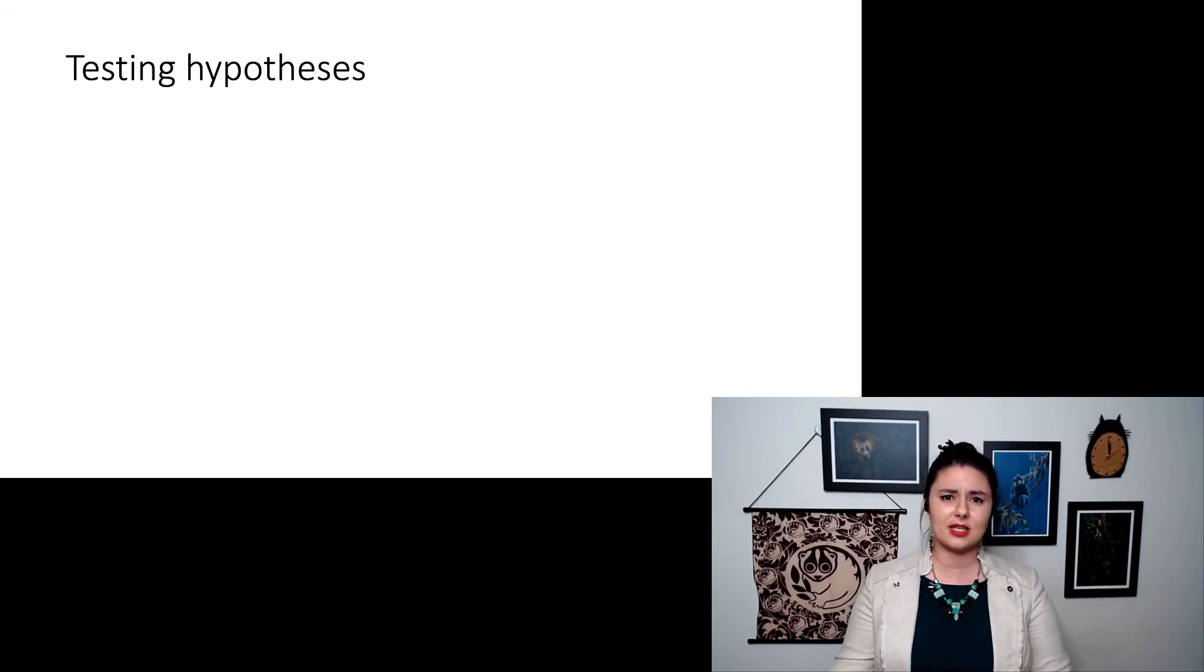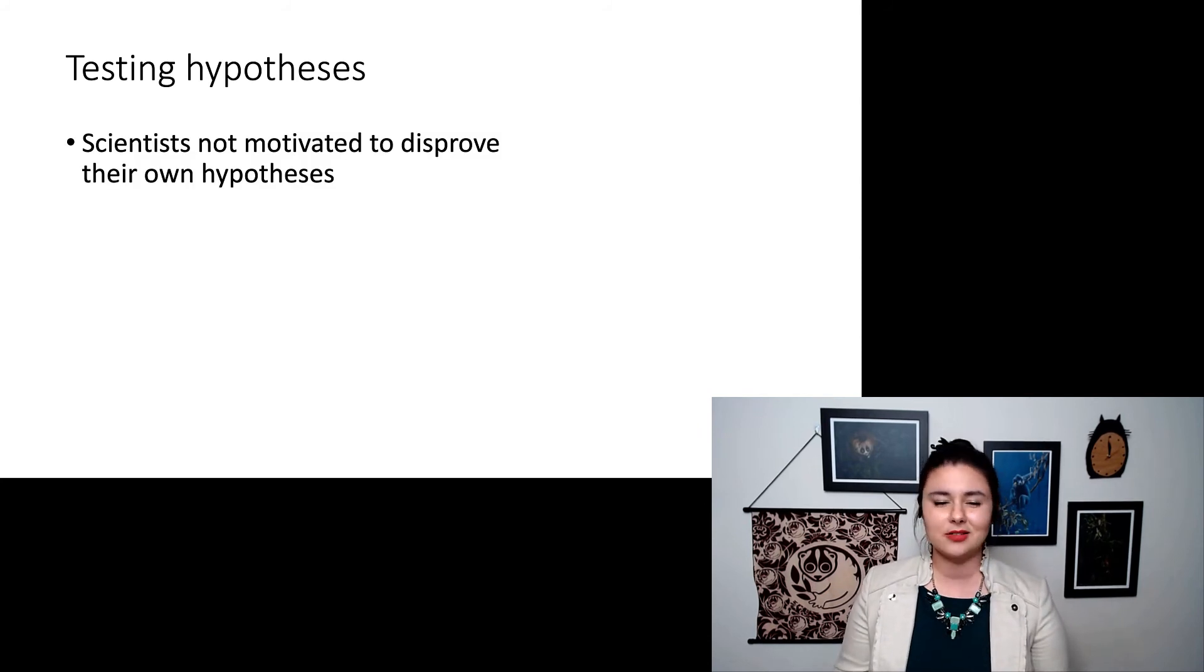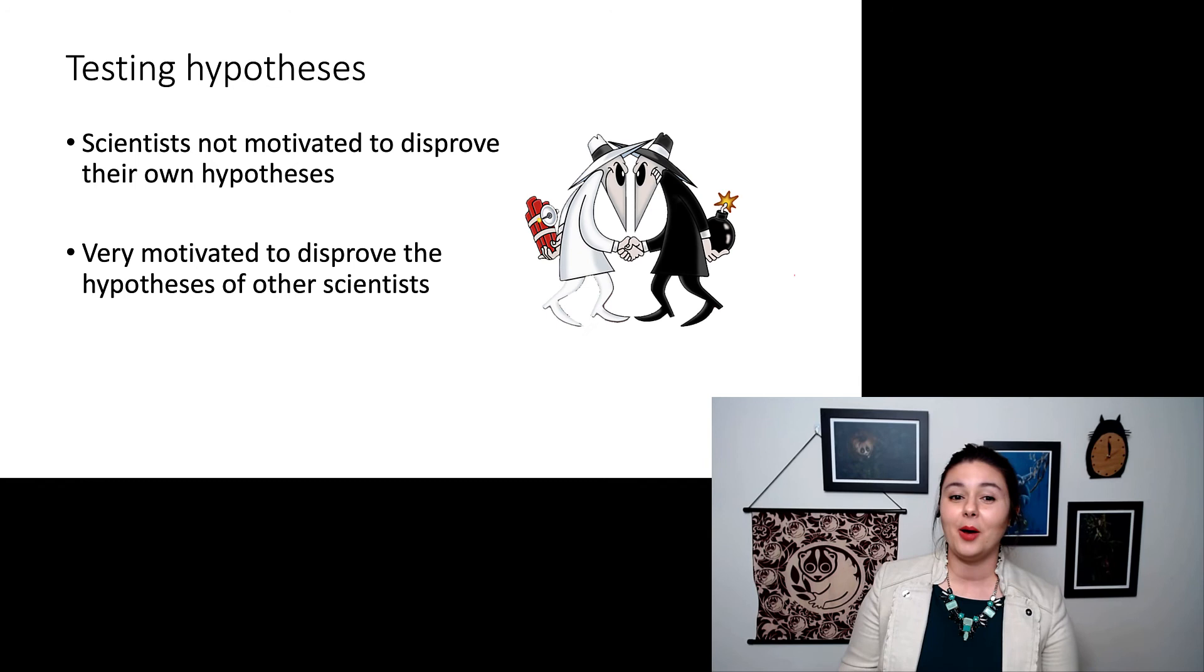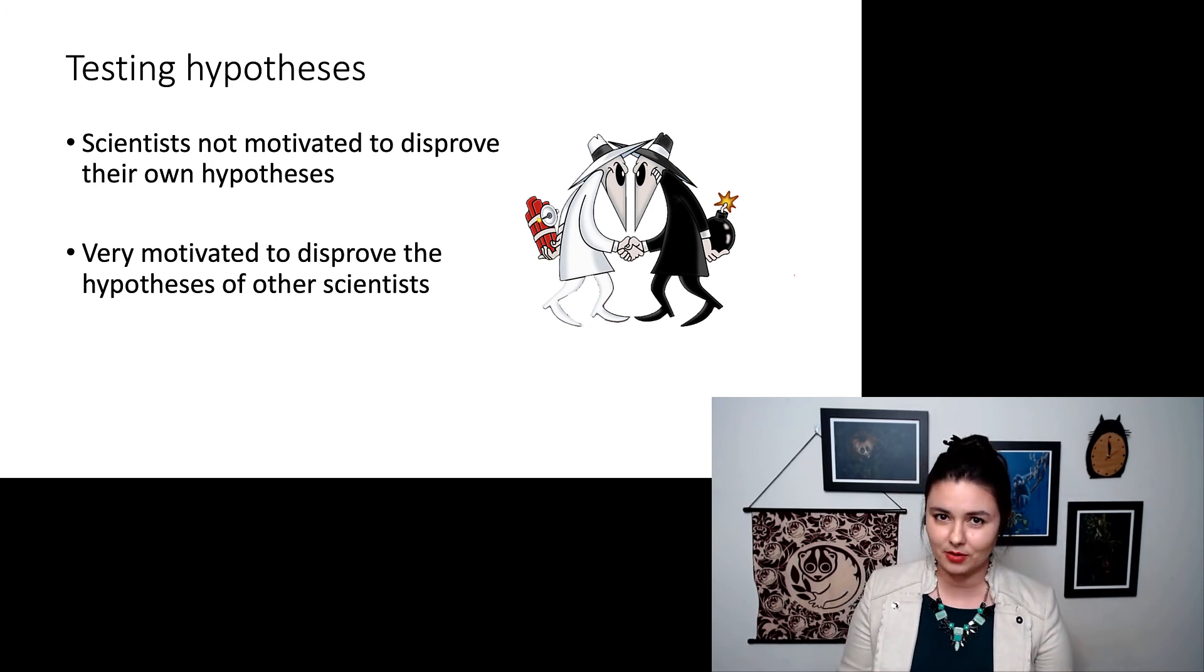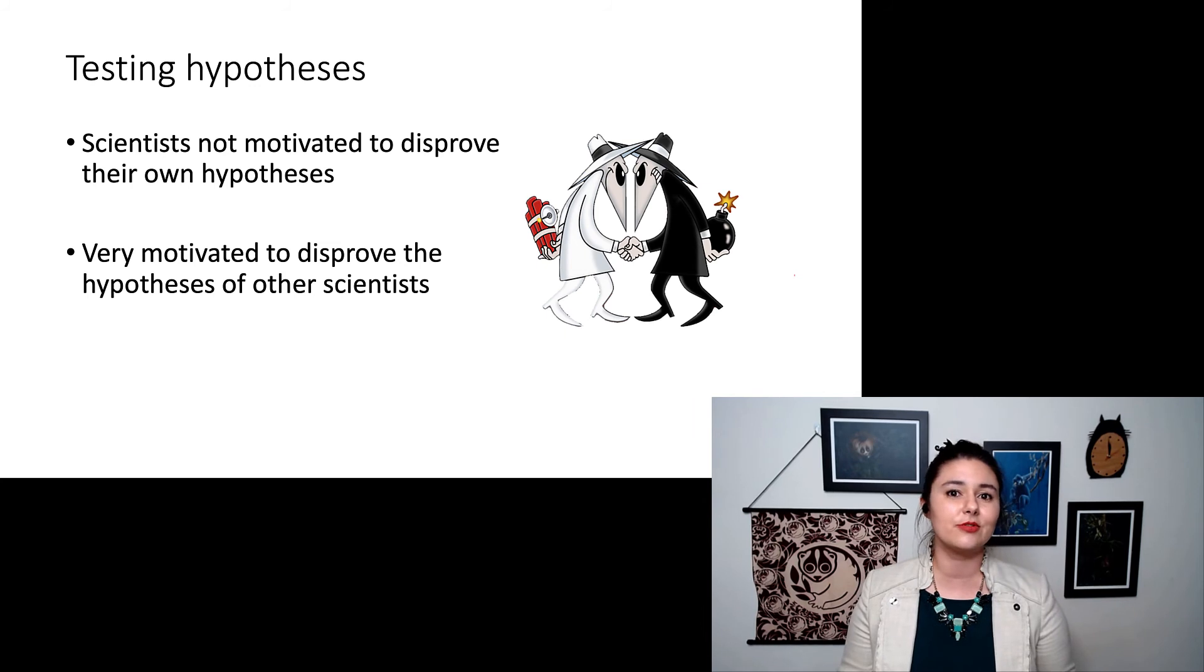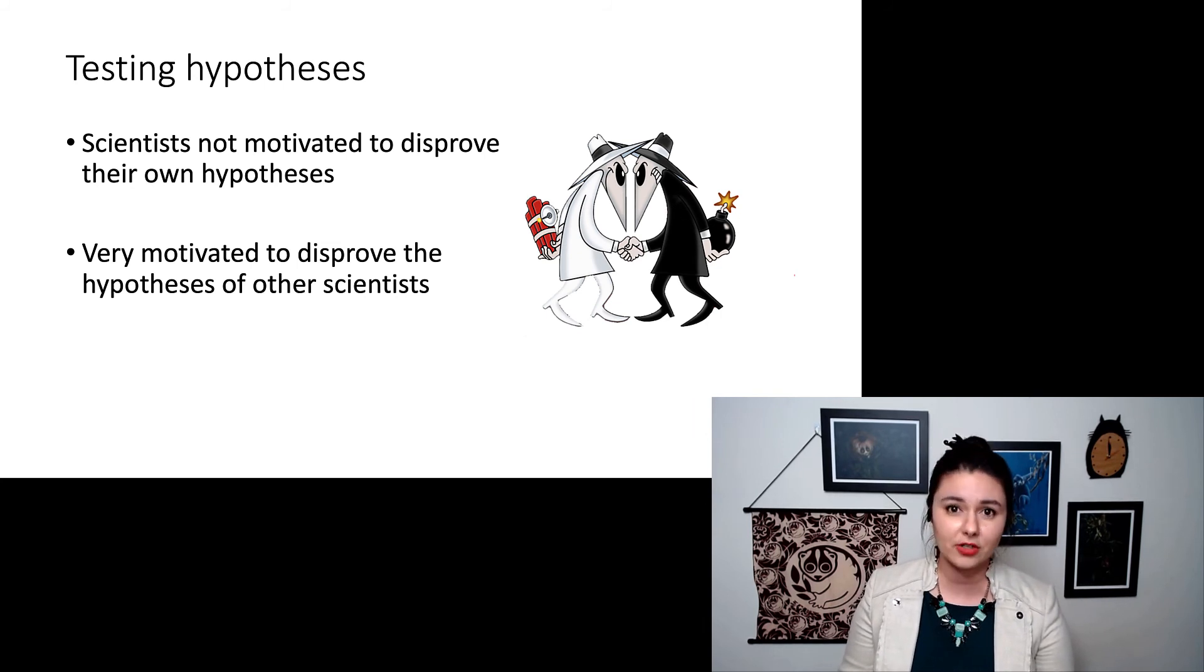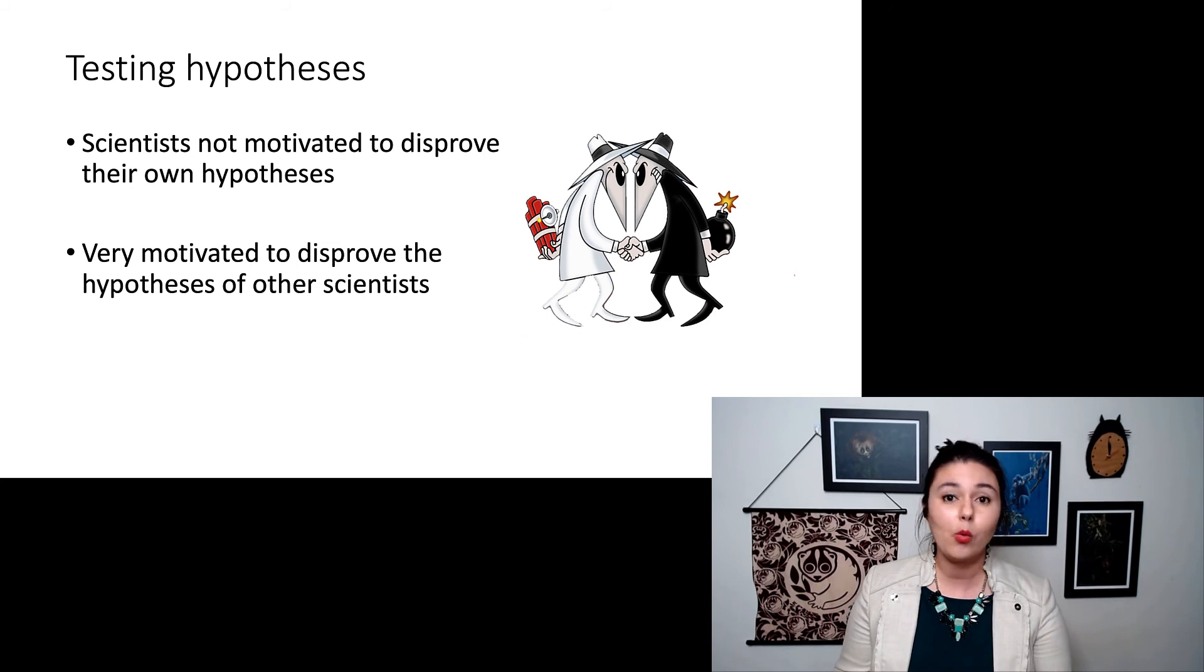When we test these hypotheses, people aren't particularly motivated to disprove their own theories, but people are very motivated to disprove the theories of other people. This is really how modern science works. We have a lot of different people, a lot of different labs - they're all trying to disprove each other because they want to be on top. But this provides a really rich ground to make sure things are constantly tested over and over again. So even if something is published that wasn't correct, someone will figure it out really soon.